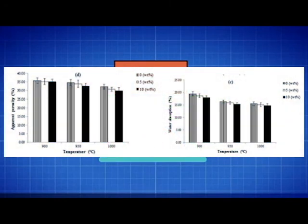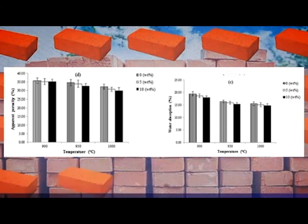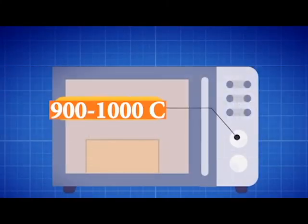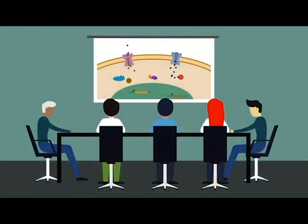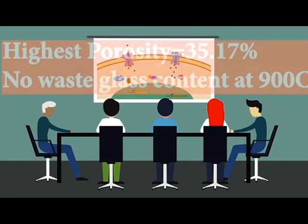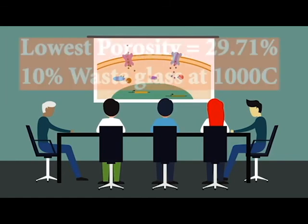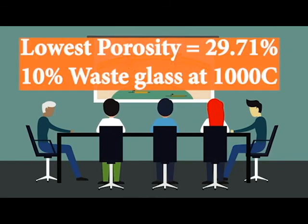Our next characteristic is on water absorption and apparent porosity. The results showed that there is an apparent trend to the addition of waste glass to the water absorption and apparent porosity. The water absorptions of clay bricks fired at temperatures between 900 and 1000 degrees Celsius were in the range of 14.7 to 18.66%. The highest porosity was 35.17% with no waste glass addition fired at 900 degrees Celsius, and the lowest was 29.71% with 10% waste glass addition fired at 1000 degrees Celsius.